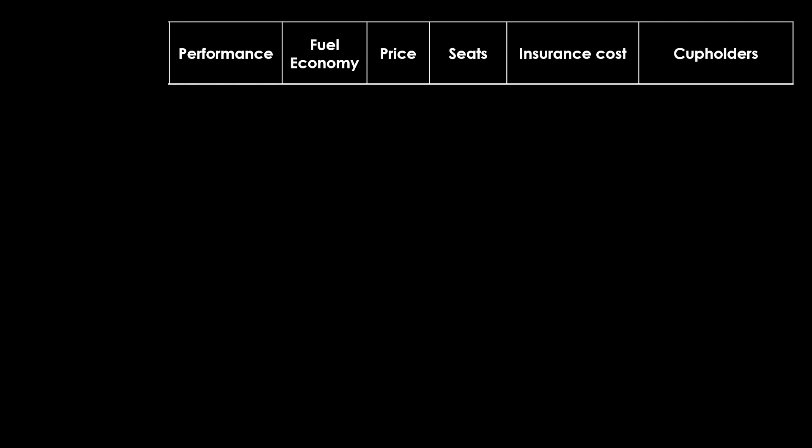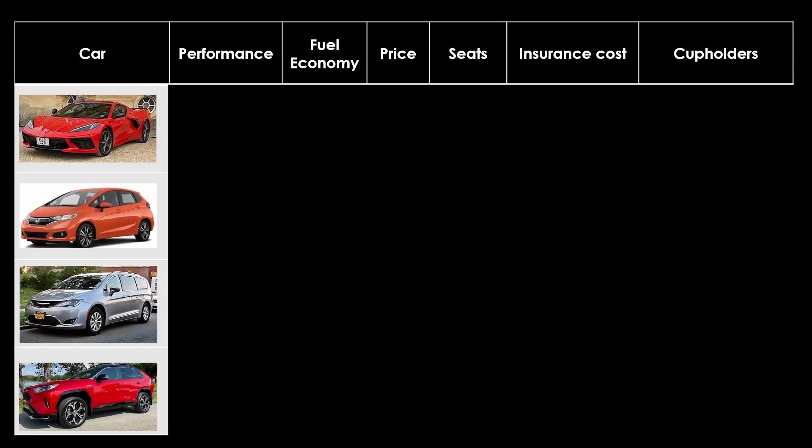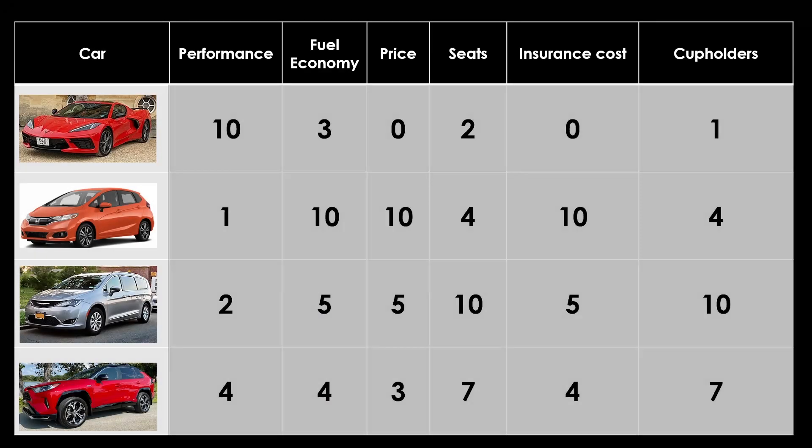These are the things that you care about in a car. You then create a list of cars and rank each car based on the requirements. That gives you a nice matrix of data and, based on how important each requirement is to you, you can figure out which car is the best choice.